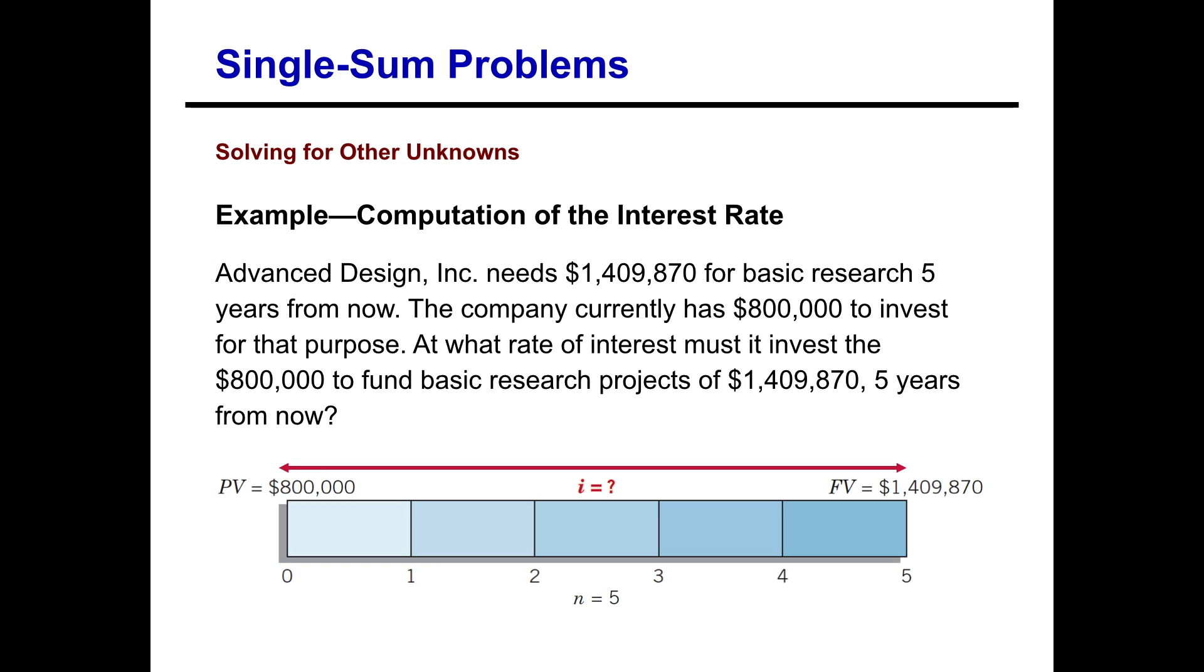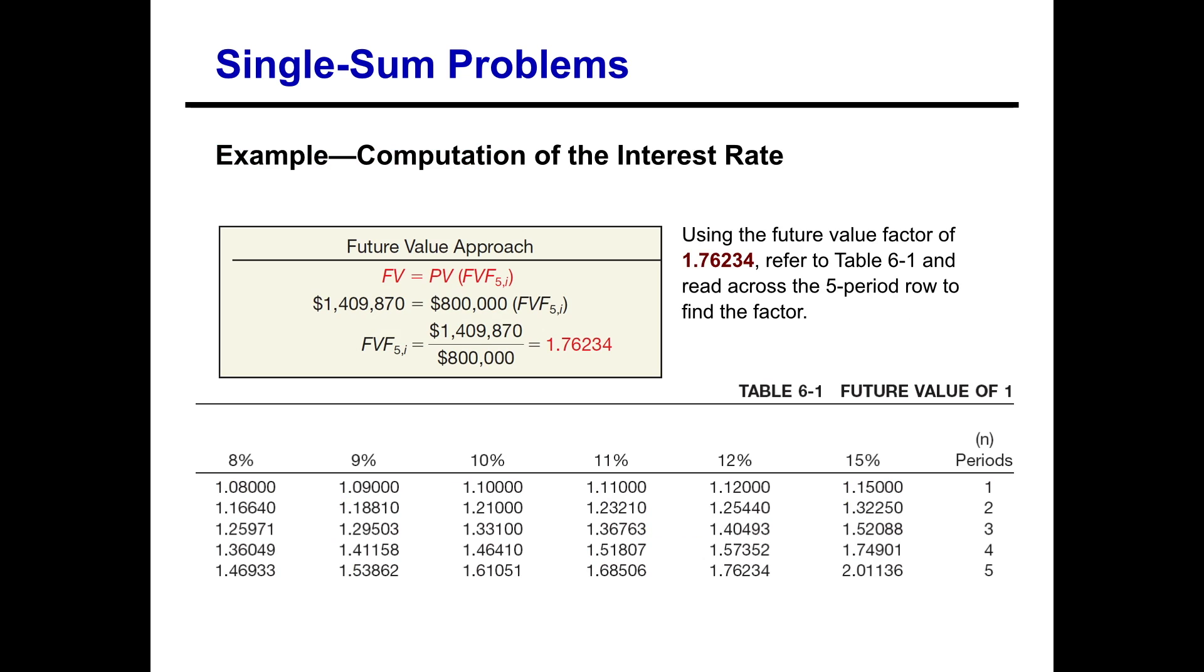So again, as you can see on our timeline, the piece that we're missing here is the interest rate. So what interest rate are we going to need to be able to invest $800,000 today for the next over the next five years and end up with a little over $1.4 million? Well again, we can use the future value and the present value approaches. So let's look at the future value approach firstly.